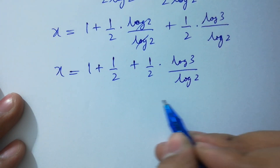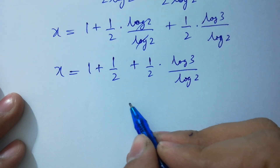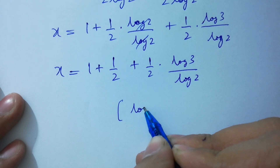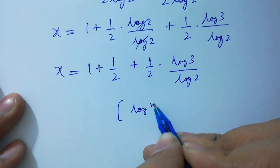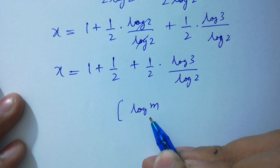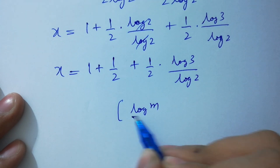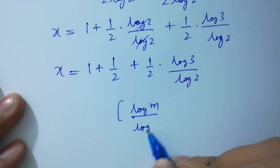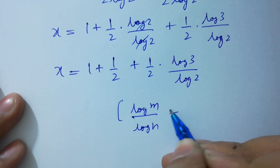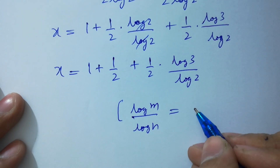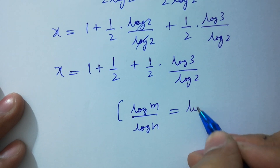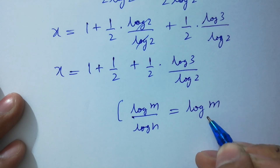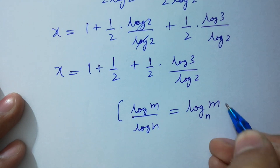Since log m over log n equals log m to the base n, we can apply the change of base formula to simplify the expression further.